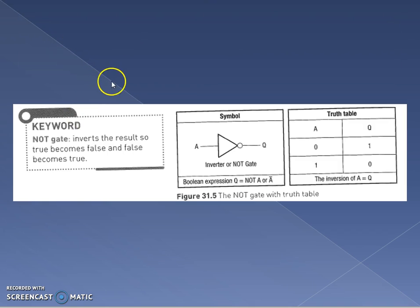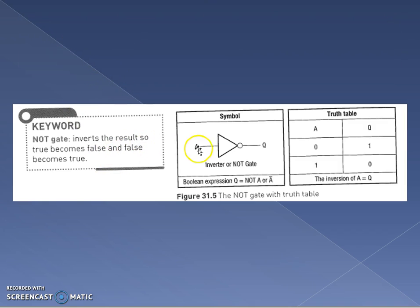We've got the NOT gate. The NOT gate only has 1 input and it inverts this. So A goes in and it's giving us Q. So if A is 0, Q is 1. If A is 1, Q is 0. So it inverts the result.